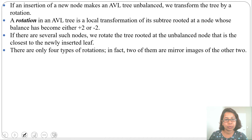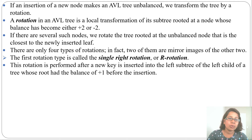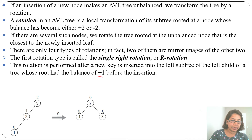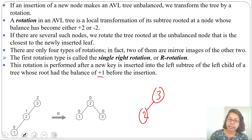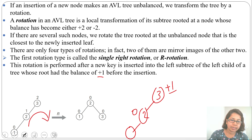There are only 4 types of rotation; in fact, 2 are mirror images of the other 2. The first rotation is called single right rotation, or R rotation. It is performed after a new key is inserted into the left subtree of the left child of a node whose root had balance factor +1 before insertion — meaning it was +1 before and becomes +2 after insertion. In this example, before insertion there are nodes 3 and 2 with balance factors +1 and 0 respectively. After inserting a node as the left child of 2, we do a right rotation: node 2 becomes the parent, 3 becomes its right child, and 1 becomes its left child.